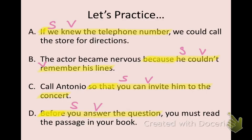Before we move on, I just want to remind you that if an adverb clause comes at the beginning of the sentence, it will go all the way until the comma — for example, sentences A and D. If the subordinating conjunction comes in the middle of the sentence, it will still begin with a subordinating conjunction and go to the end mark, as in sentences B and C.